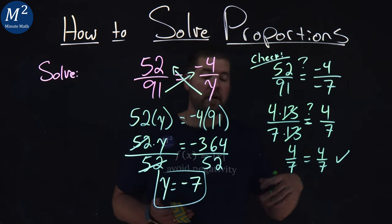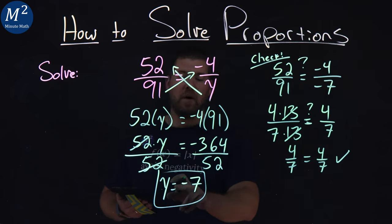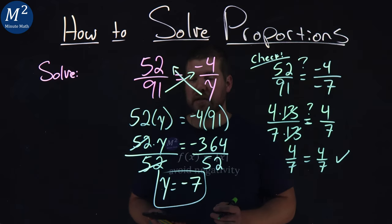Left and right-hand side are equal, confirming our answer of y equals negative 7.